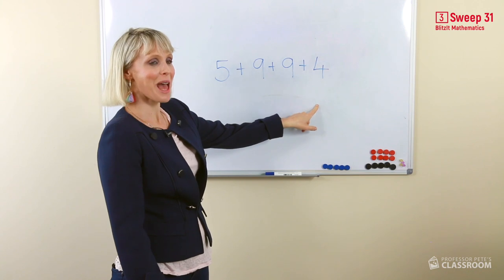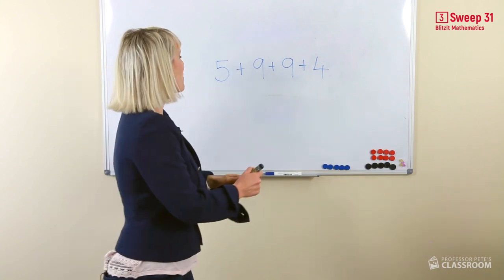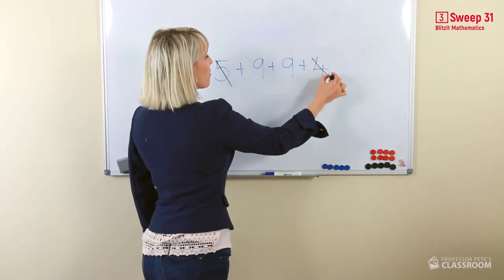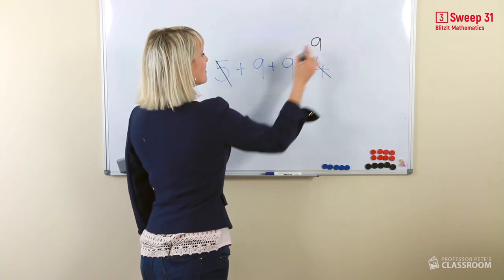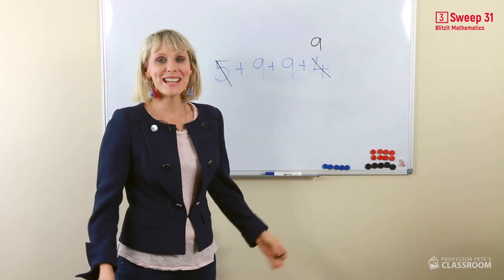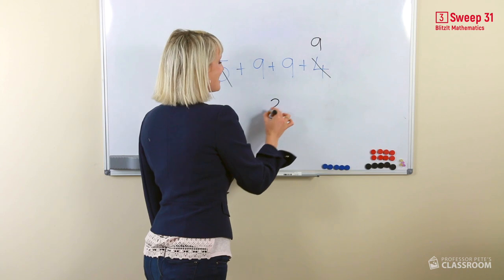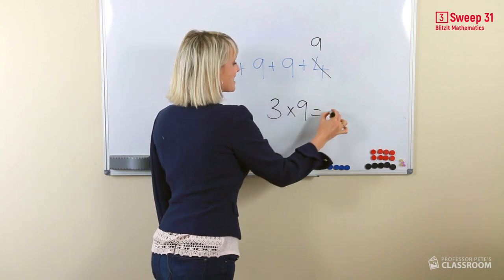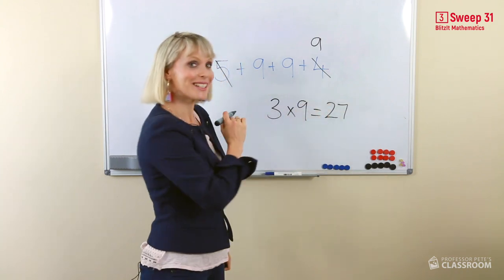Ah, found our multiples again. We know that five and four equals nine. And we know that three nines equals 27.